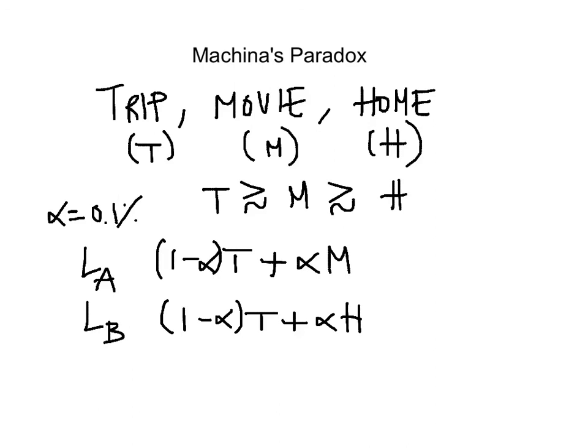Now, the independence axiom tells you that the first lottery should be preferred to the second lottery. And the reason is because, considering that M is preferred to H, the combination of M with a third lottery T should be preferred to the combination of H with a third lottery T. So we should have this lottery preferred to this one. However, it would not necessarily be irrational to prefer the second lottery, Lottery B.